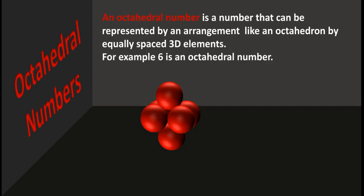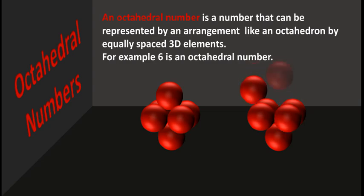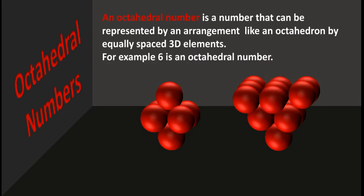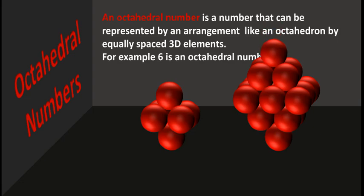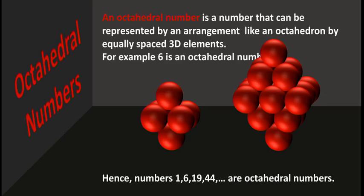Have a look at this arrangement: 19 elements arranged like an octahedron, so 19 is an octahedral number. Hence the numbers 1, 6, 19, 44, etc. are octahedral numbers.